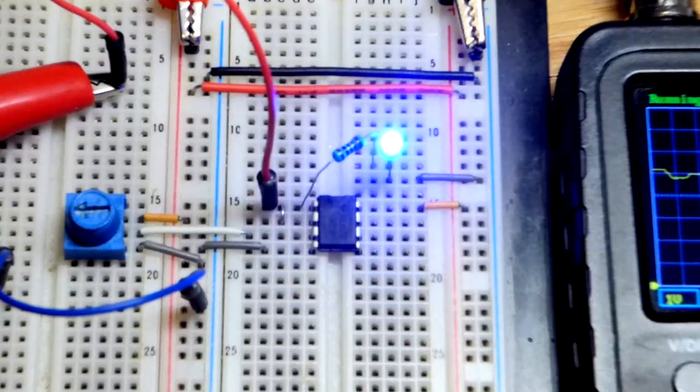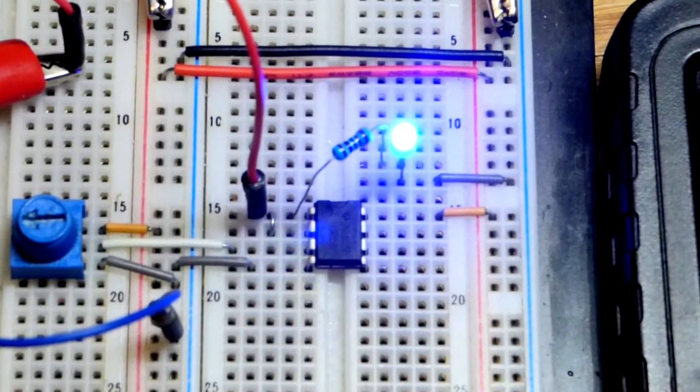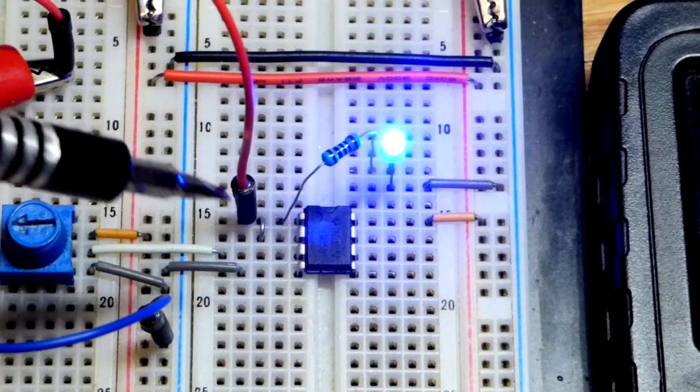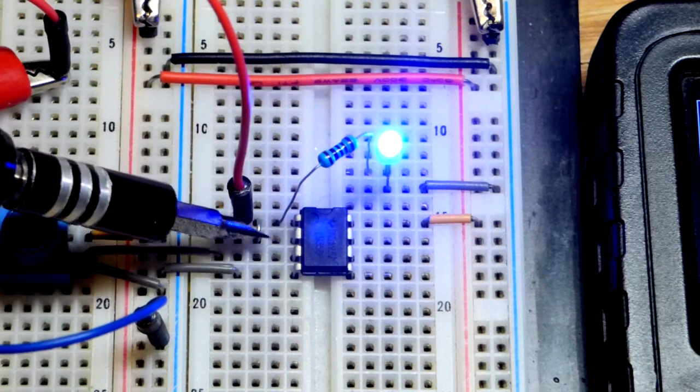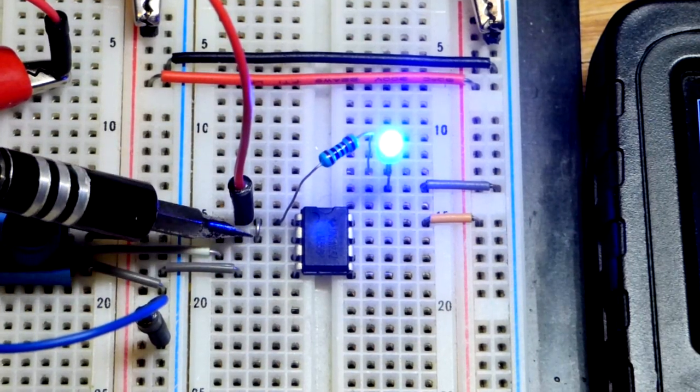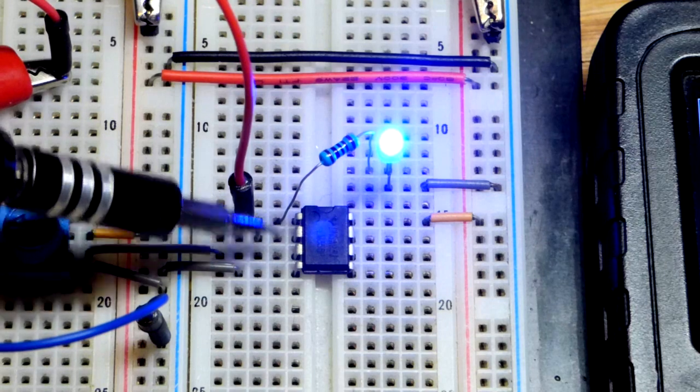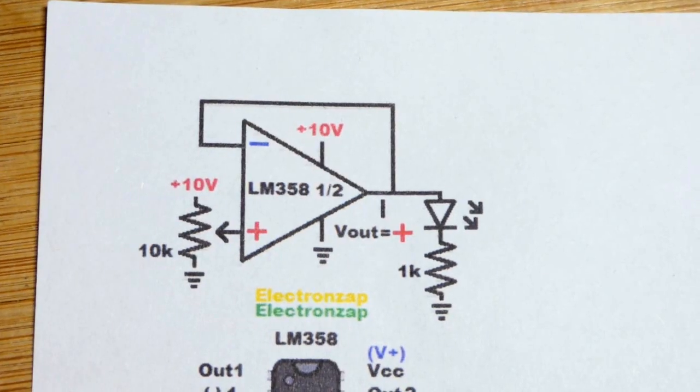And I'll zoom in. You can see that the reason why it's negative feedback, we have the output at the top up there and the inverting input which has a negative symbol on the schematic. They're tied directly together right there.